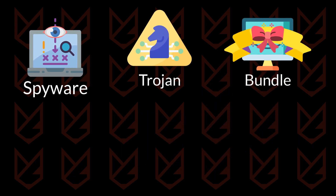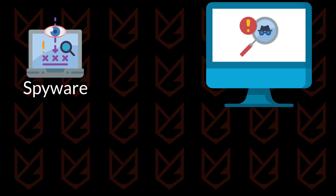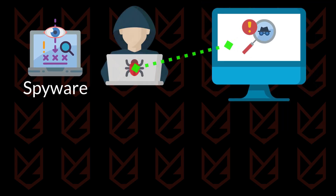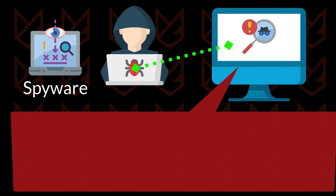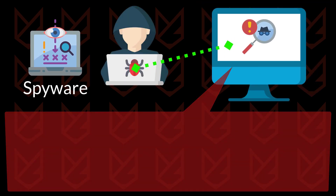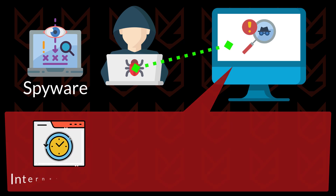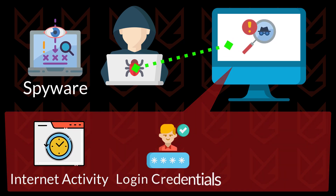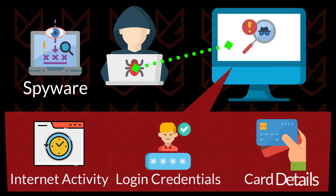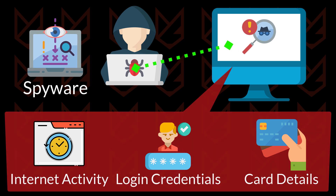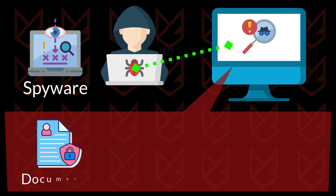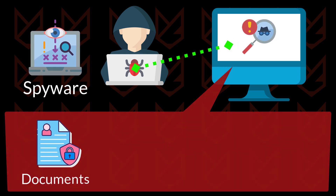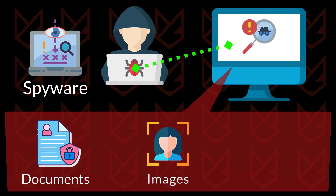After infiltrating the device, spyware silently remains active in the background and monitors your activities. It tracks the internet activity of the victim, login credentials, banking card numbers, and others. It could also be used to search and send particular files such as personal documents, images, and videos.